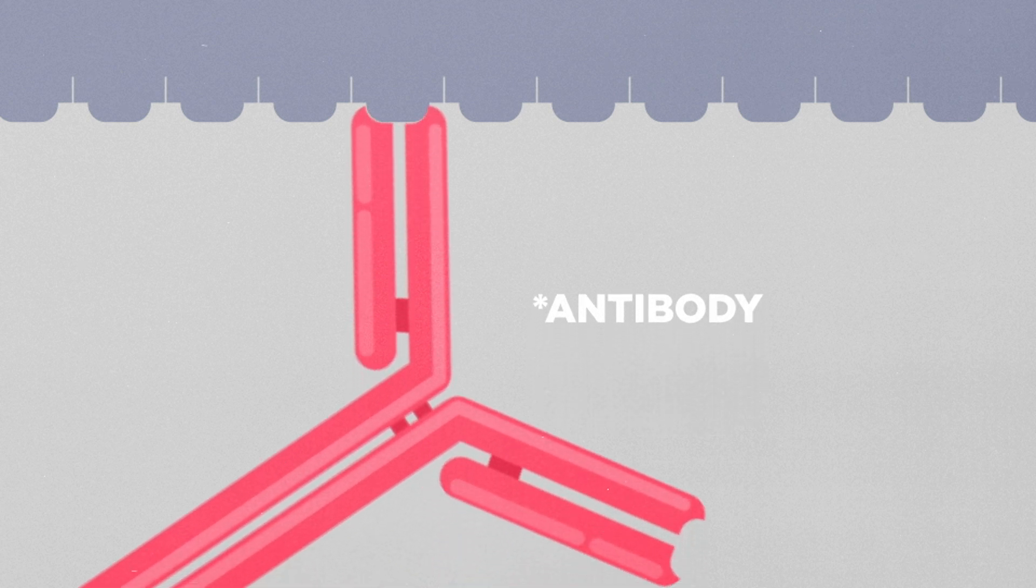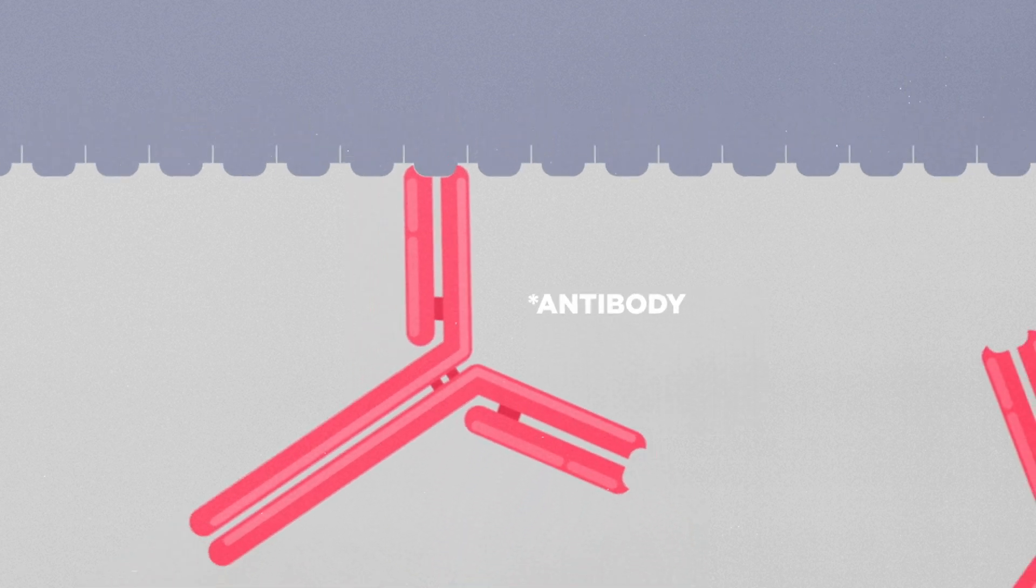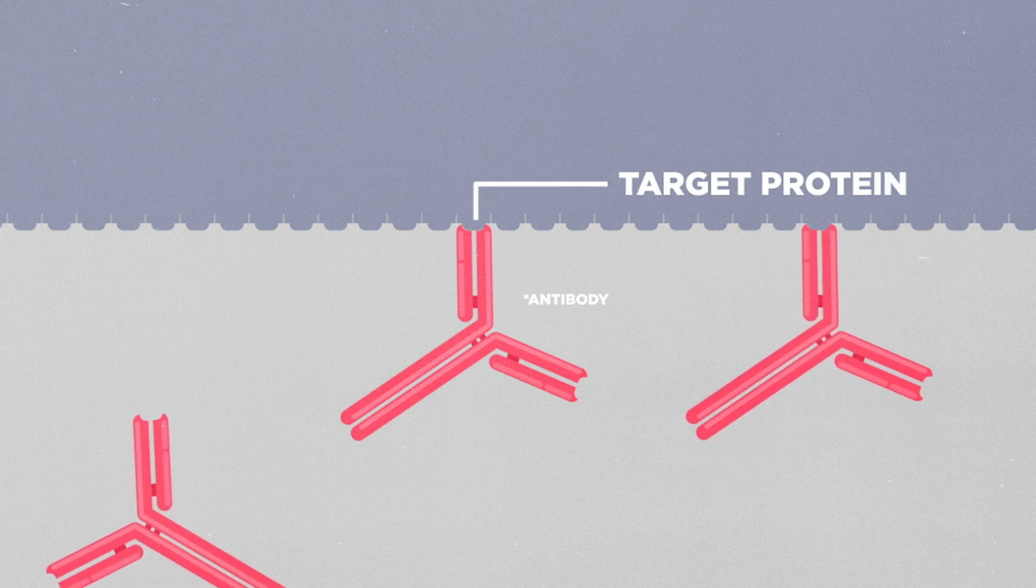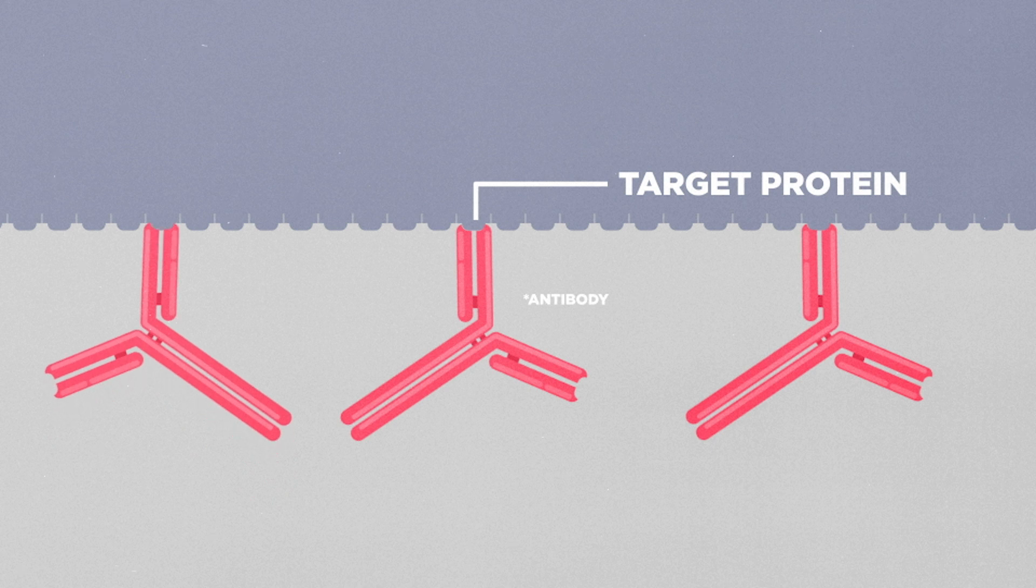This is where antibodies come in. Antibodies are naturally occurring little proteins found in our immune system. They are highly specific, binding to a particular target of an intruder, disabling them and rendering them useless or killing them.